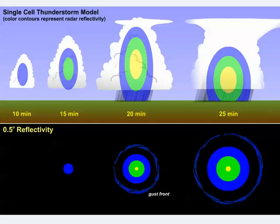As a final summary, here's a two-part schematic showing the evolution of a single-cell thunderstorm. The top panel shows a time sequence of a cross-section through a single-cell thunderstorm, showing idealized radar composite reflectivities.